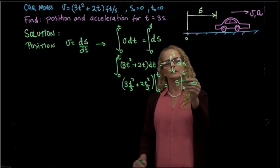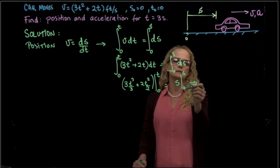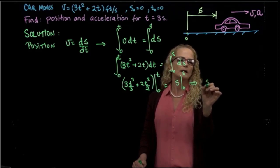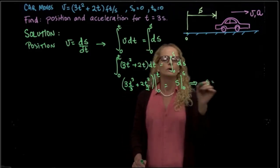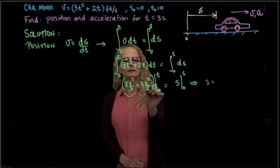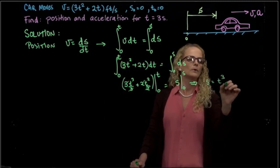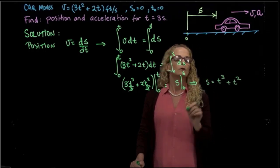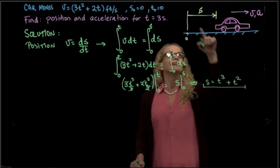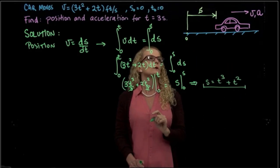So finally, I get that if I evaluate at 0 and s, I get s equals to t cubed plus t squared. So this is the expression for the displacement of the car.